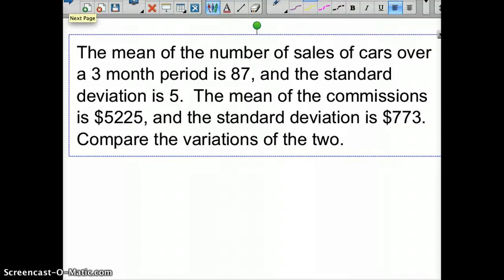So let's say the mean of the number of sales of cars over a three-month period is 87. So we averaged 87 cars sold. And the standard deviation is five. The mean of the commission is $5,225, and the standard deviation of that is $773. Compare the variations of the two.